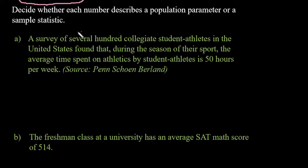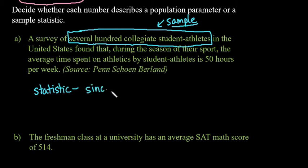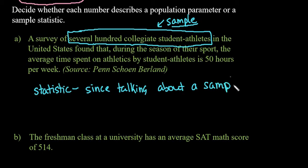Alright, let's talk about the first one. The key word here is that it's a survey of several hundred collegiate student athletes. Since it's only several hundred, this is going to be a sample of all collegiate student athletes. That's the information that tells us — even though it didn't explicitly state 'sample' — we can deduce from the fact that we're only talking about several hundred that it is referencing a sample. Since this is a sample, this would be considered a statistic. Out of these several hundred people, they came to an average: the average time spent on athletics by student athletes in a week is approximately 50 hours. That number is the sample statistic.